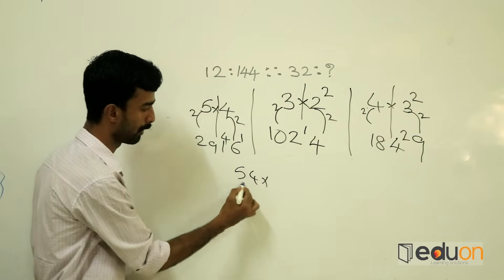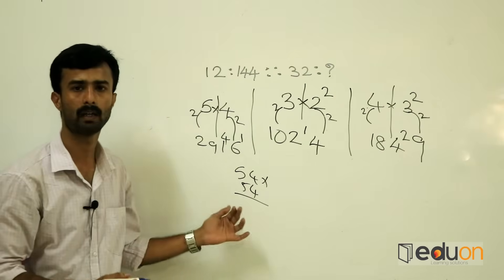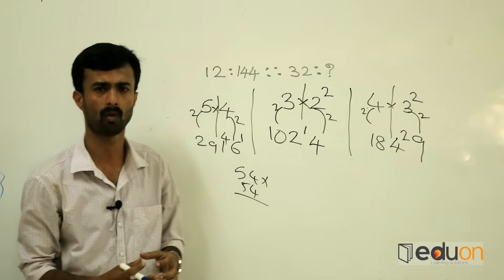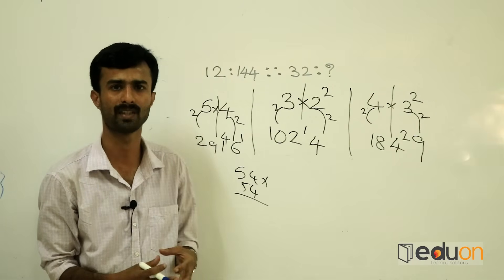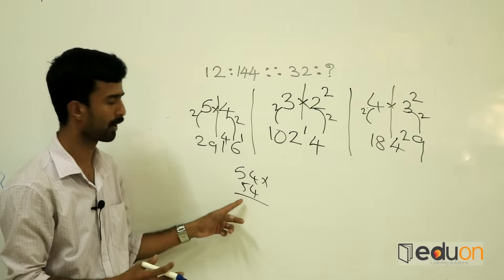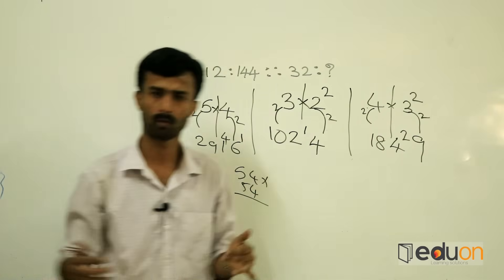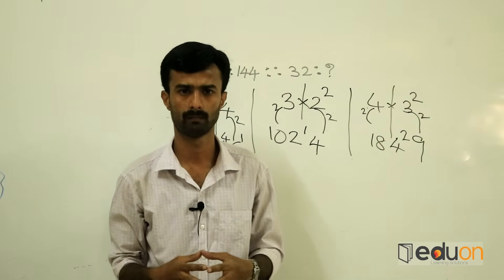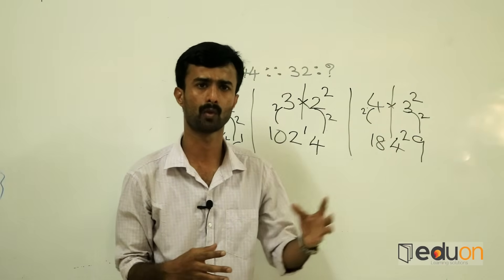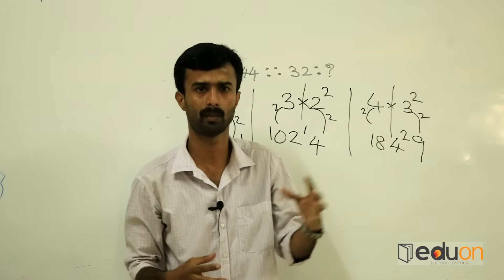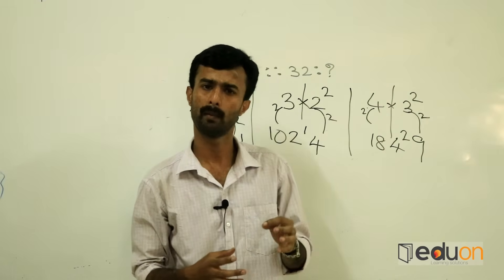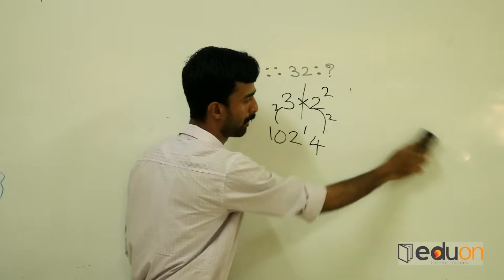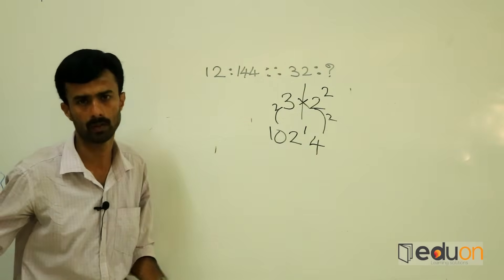We have done this multiple times. We have to use the shortcut method. We have to score more marks. If we follow these methods, we will score more. Now let us follow — the first number we call is 32.